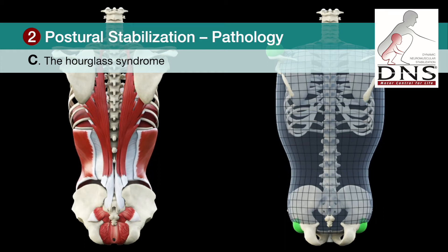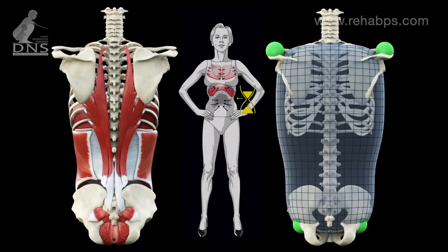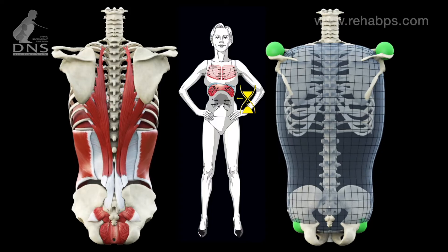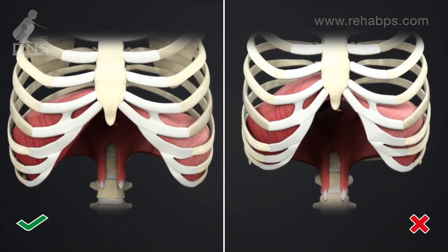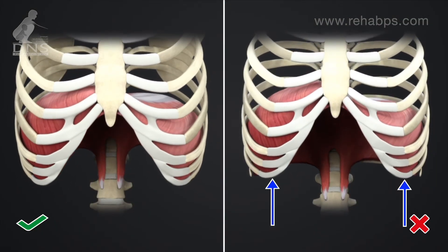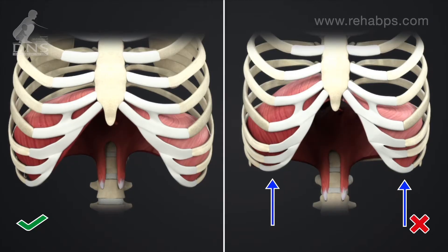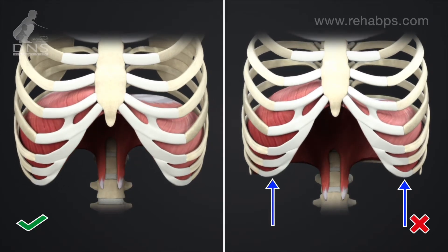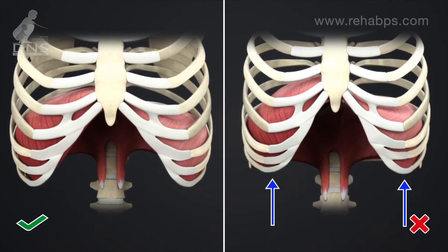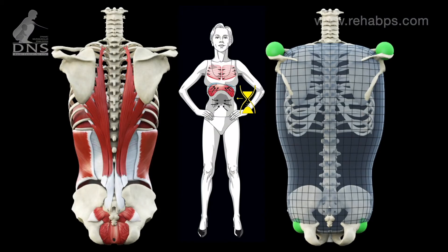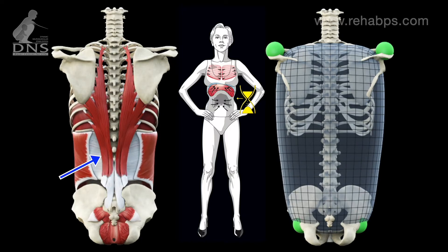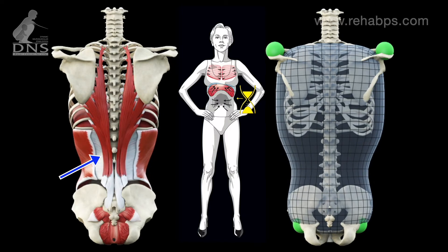The following is observed in what we call an hourglass syndrome. With insufficient spinal stabilization, the diaphragm does not flatten sufficiently. The lower aperture of the ribcage does not expand and the content of the abdominal cavity is not sufficiently compressed. This leads to an increased activity of the superficial spinal extensors.